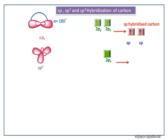After hybridization carbon atom has three SP2 hybridized orbitals and one unhybridized 2Pz orbital. The angle between two SP2 hybridized orbitals is 120 degrees.